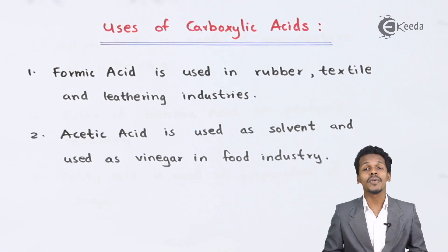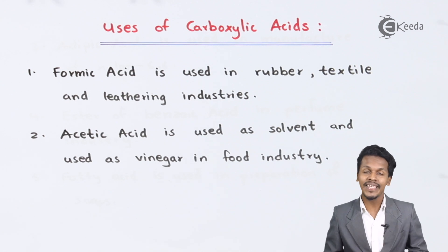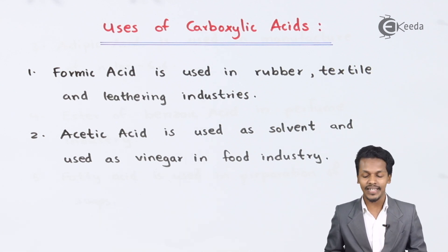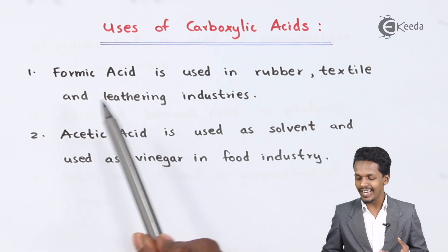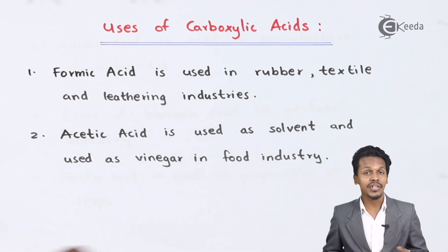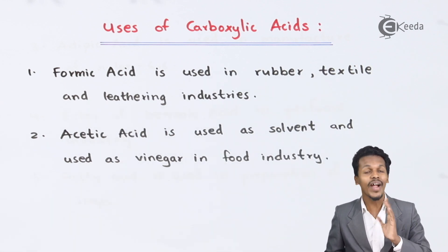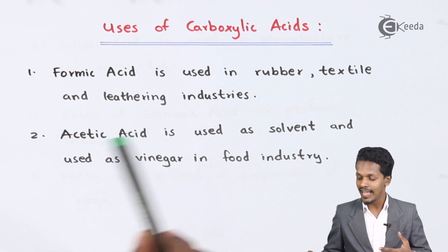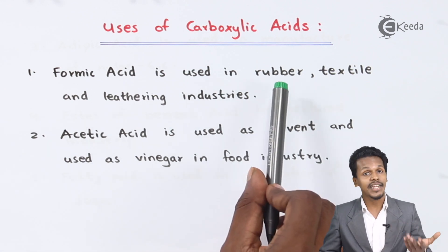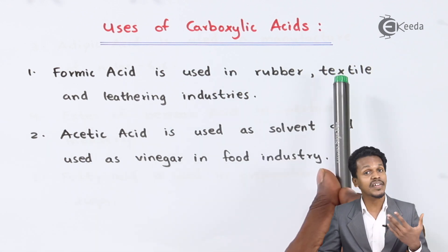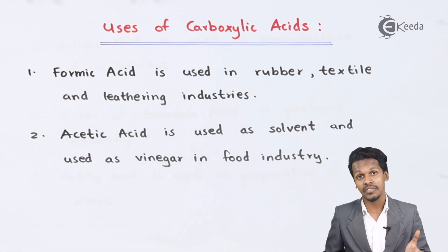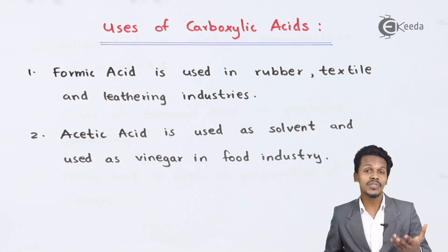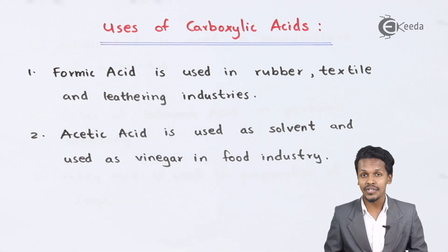Starting with the first use: formic acid is used in the rubber, textile, and leather industries. This acid is used widely in these industries — in the preparation of rubber, textiles, as well as in leather industries.